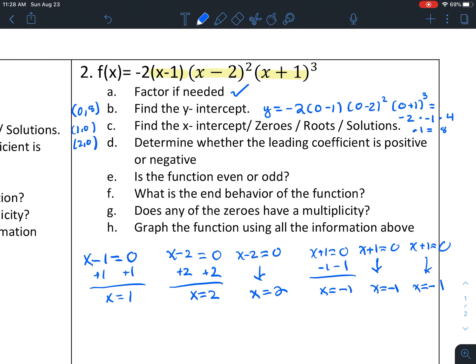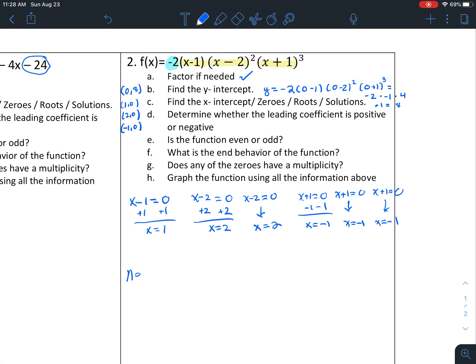So we'll talk about how that impacts the graph later. Now we're going to look at letter D, which says determine whether the leading coefficient is positive or negative. When something is in factored form, it's really nice to see what the answer is. Here our leading coefficient is negative 2, so we know our sign is negative.